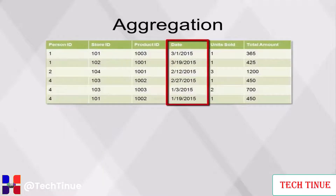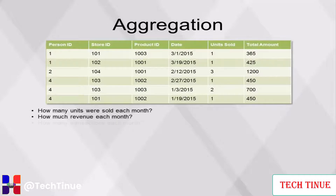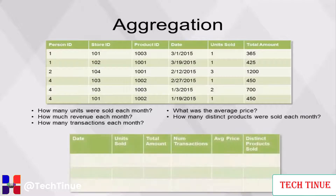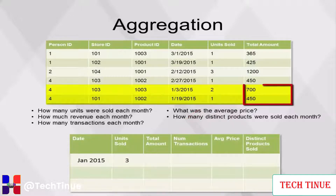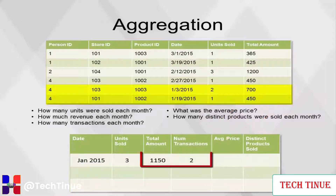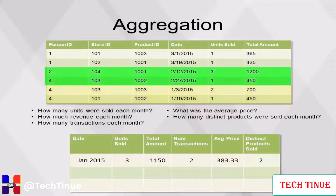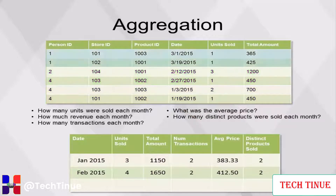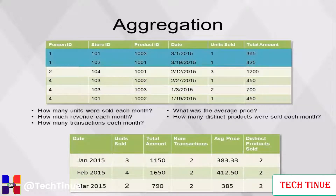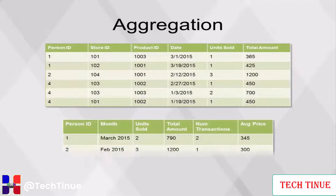The final example uses the month and year components of the date field to calculate all possible levels of aggregation. How many units were sold each month? How much revenue each month? How many transactions each month? What was the average price? How many distinct products were sold each month?